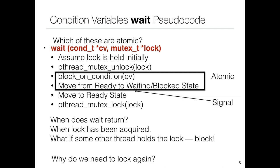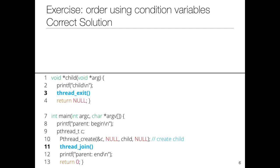Why are we locking at the end of the wait? Because we're returning from wait and we want to execute the critical section. Because initially, when we go into wait, we already hold the lock.